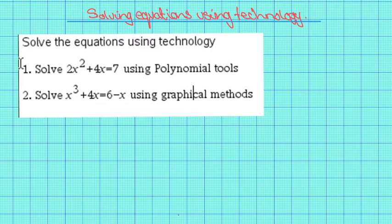So if we want to solve 2x squared plus 4x equals 7, we must first rearrange and put it in the general form.